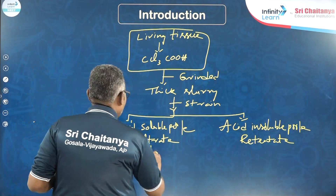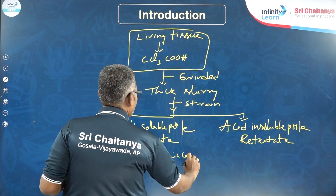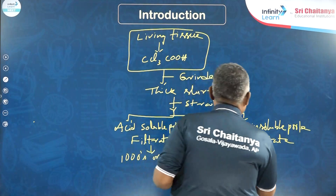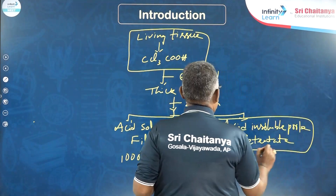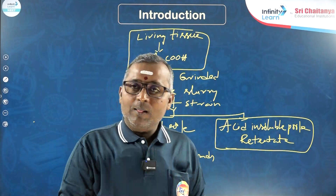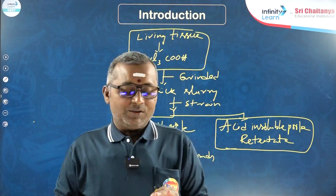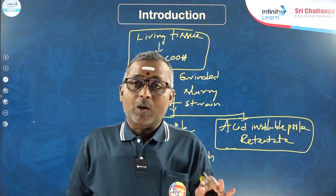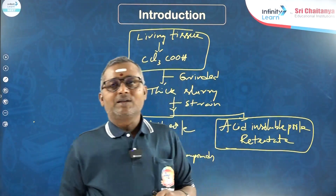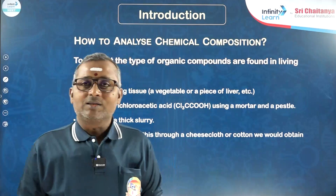The acid-soluble pool contains thousands of organic compounds — this is very important. Whereas in the acid-insoluble pool, you can find macromolecules like nucleic acids, proteins, and polysaccharides. You can also find lipids as a micromolecule in the acid-insoluble pool. This is what you get when you do the chemical analysis of a tissue.